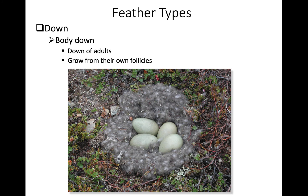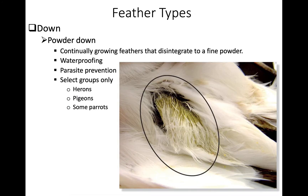We'll discuss brood patches further when covering incubation behavior. There's another relatively rare down type seen only in herons, pigeons, and some parrots — powder down. It grows out and then disintegrates into a fine powder that can help prevent or dislodge parasites and can also provide some waterproofing, which is particularly important in herons.